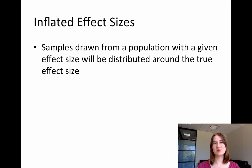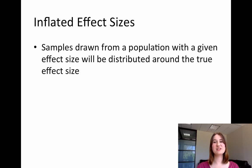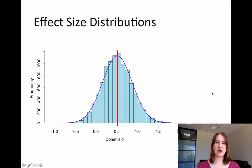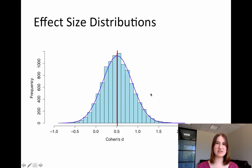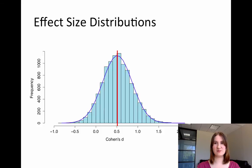However, when I run a sample in a particular study, every sample is going to have a slightly different effect size, creating a distribution centered around the population's true effect size. To give you an illustration, here's a graph of the distribution of samples around a Cohen's d of 0.5. Cohen's d is a standardized effect size for mean differences, and a Cohen's d of 0.5 is a medium-sized effect.